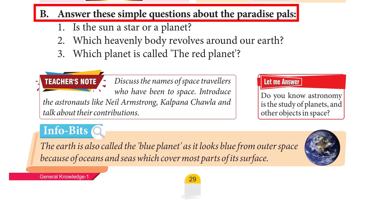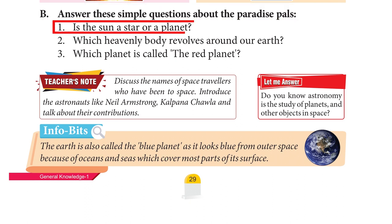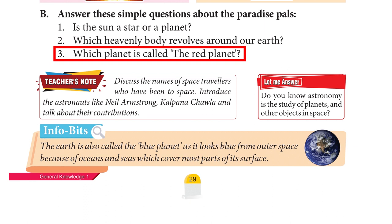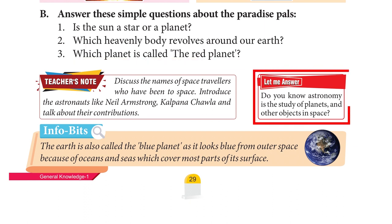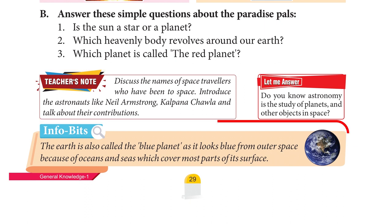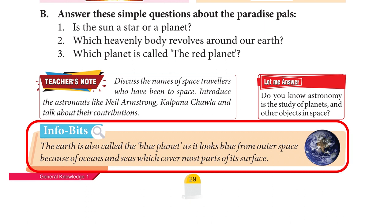Answer these questions: Is the sun a star or a planet? The sun is a star. Which heavenly body revolves around our earth? Satellite. Which planet is called the red planet? Mars. Do you know astronomy is the study of planets and other objects in space? Teacher's Note: Discuss space travellers and introduce astronauts like Neil Armstrong and Kalpana Chawla. Info Bits: The earth is called the blue planet as it looks blue from outer space because of oceans and seas which cover most of its surface.